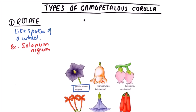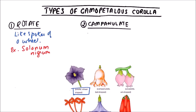The second type is Campanulate. In the Campanulate type, a bell or inverted cup-like appearance is there. The example includes Campanula.